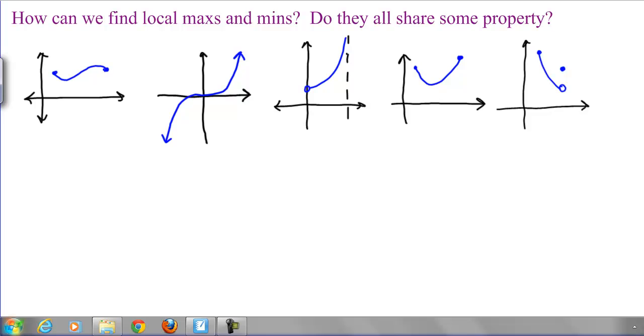If we want to actually locate all the local maxes and mins, how would we do this? How do you know if you found a local max or min? Can we see if they all have some kind of property in common?